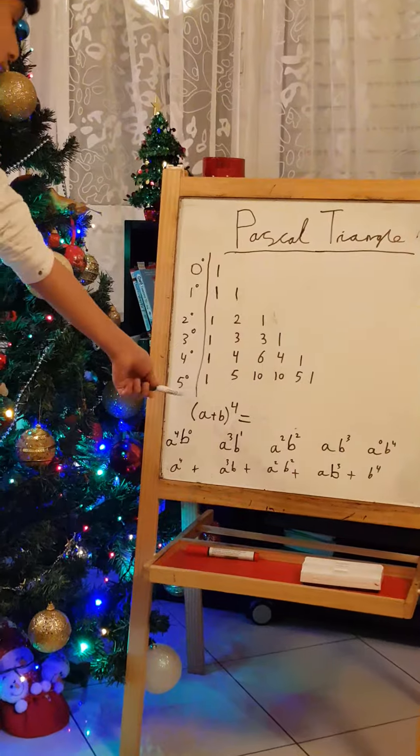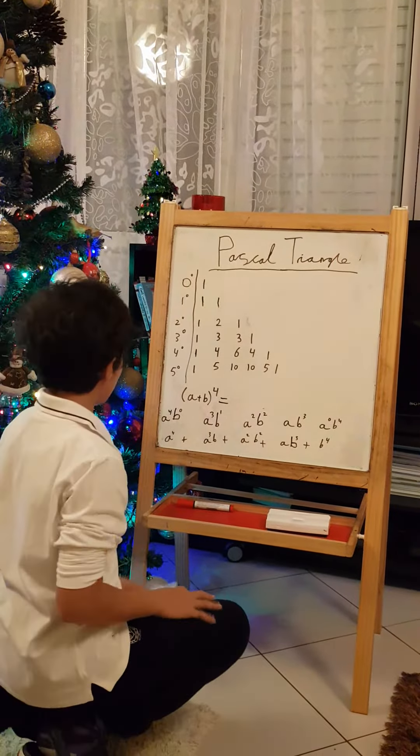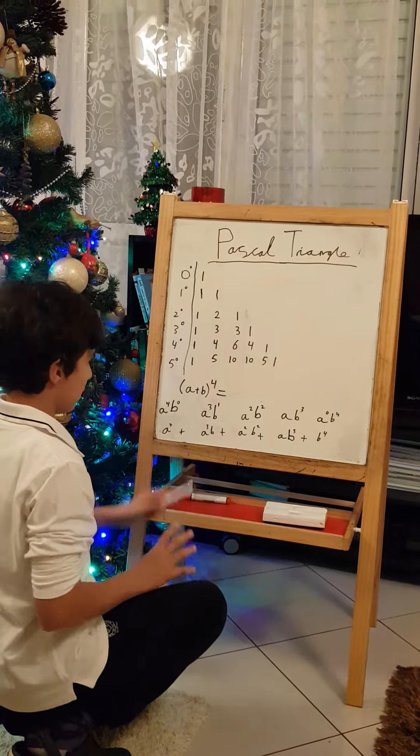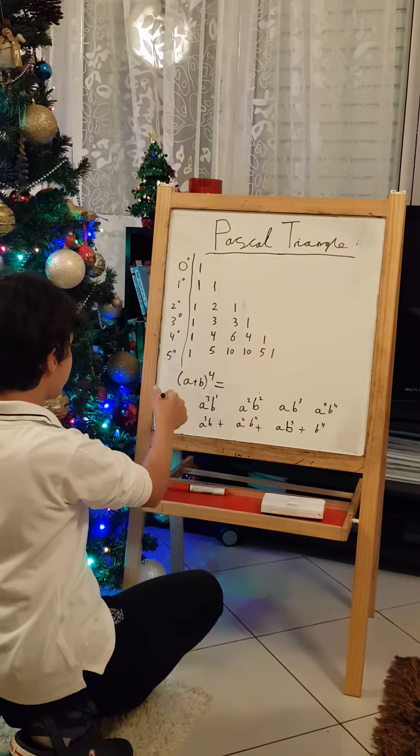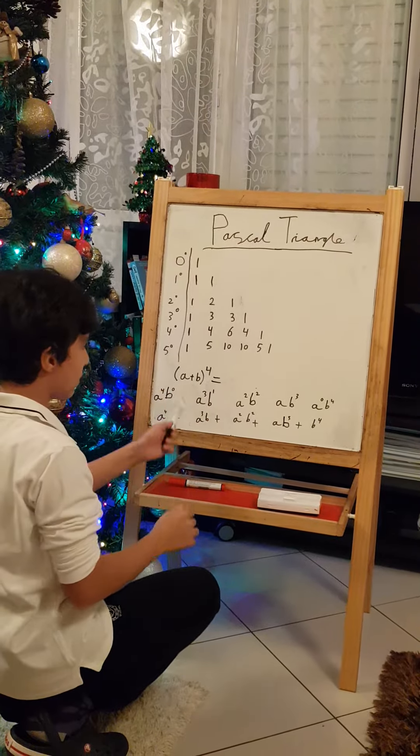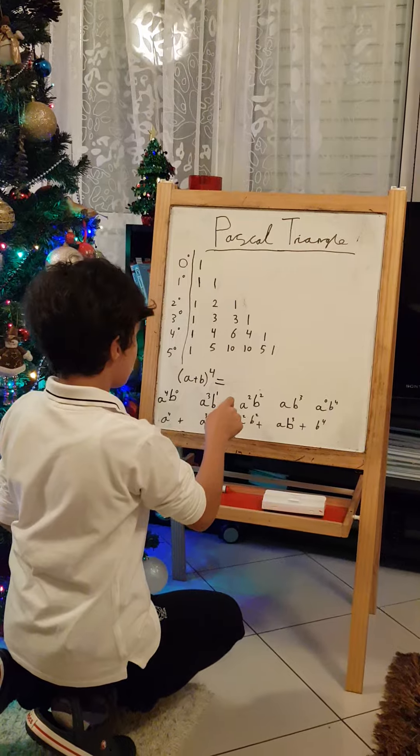Now, I'll give you an example. A plus B to the power of 4. What does this make? A^4, B^0. And then we drop 1 from A and we add it to B, which is A^3, B^1. And then we drop 1 again from A, which makes A square, B square.